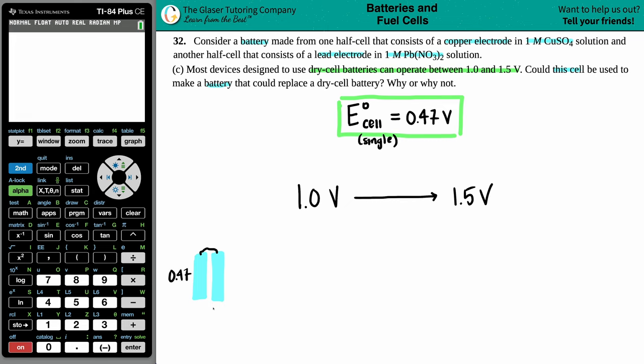Maybe if I connect them in series, I can have it used as a dry cell battery. So I add the two together 0.47 plus 0.47 and we get 0.94. So the total voltage here still would not act as a dry cell. So this is battery number one and number two.